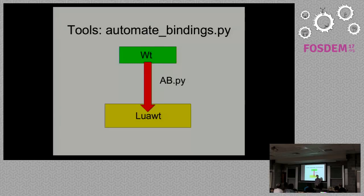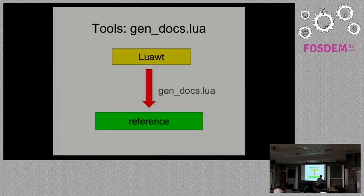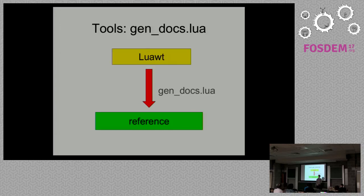We also have another tool called 'gendocs.lua', used to generate documentation. Currently it's not really documentation — it's just a list of Wt classes bound to Lua and their methods, with links to the original Wt documentation. It's acknowledged that this is not good documentation yet.